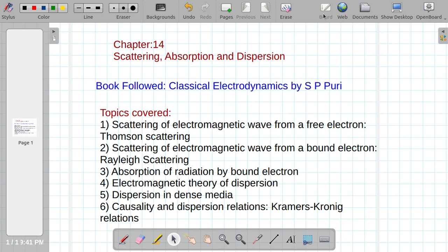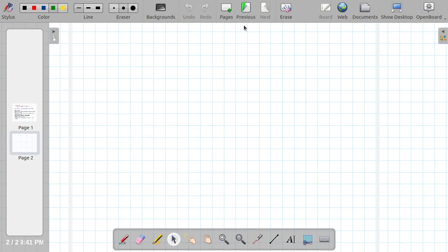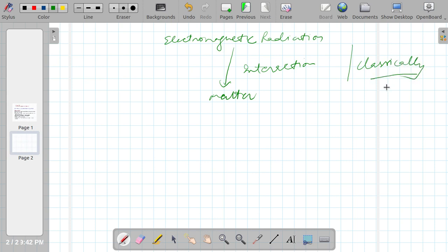Let us have a brief introduction of this chapter. Here we will talk about electromagnetic interaction of radiation with matter. We will treat things classically, not quantum mechanically. Generally when we consider electromagnetic field as photons, that means we are treating things quantum mechanically.